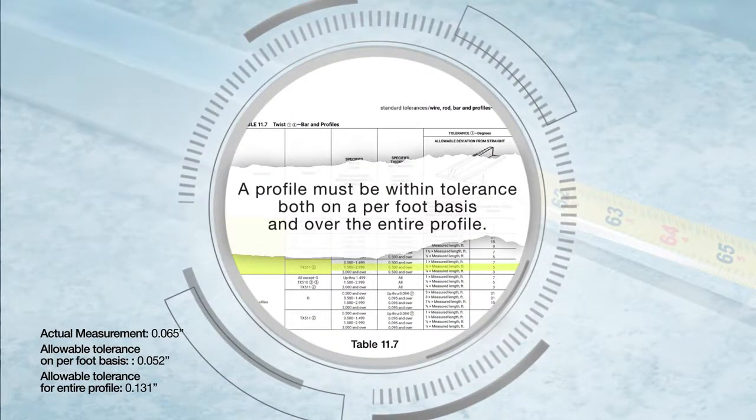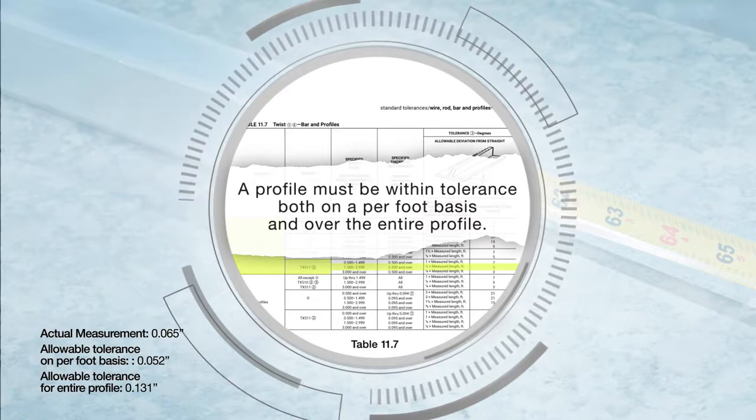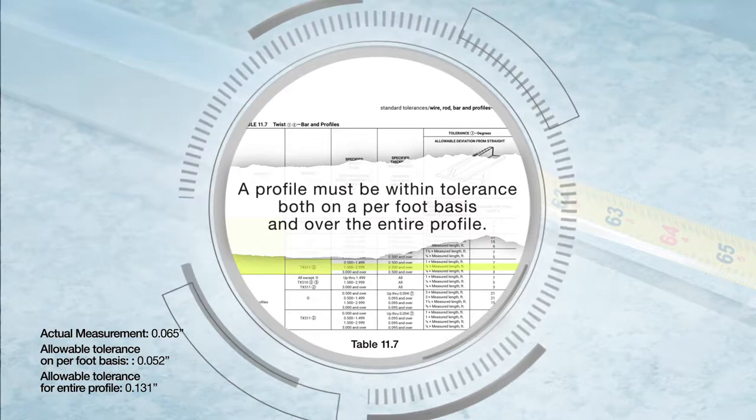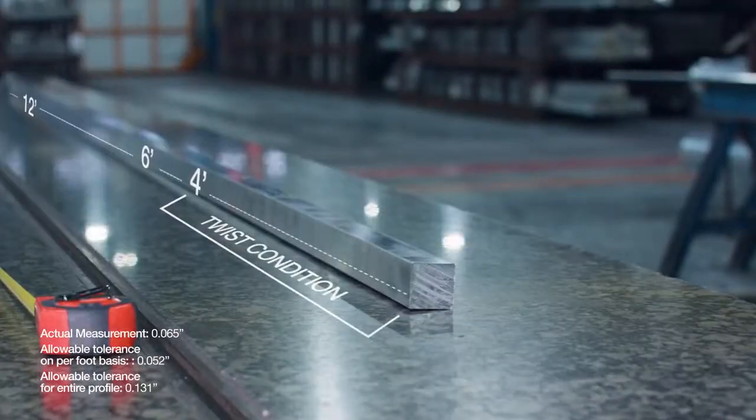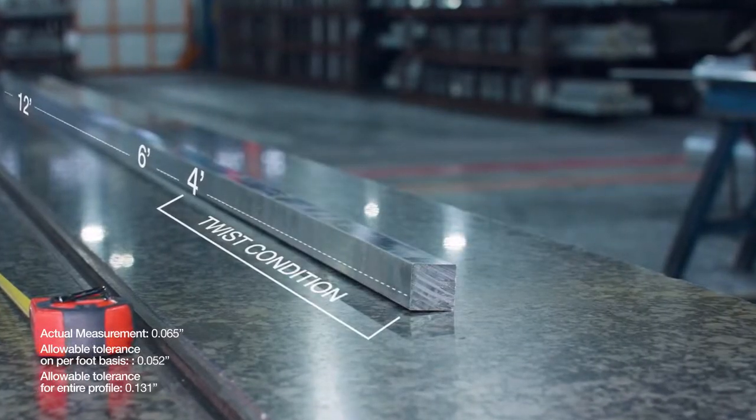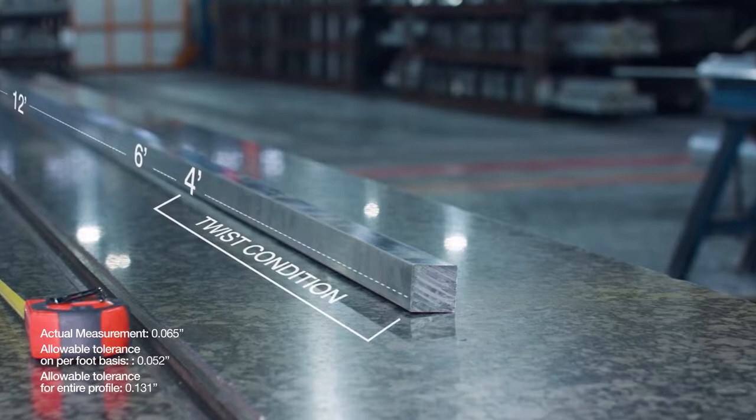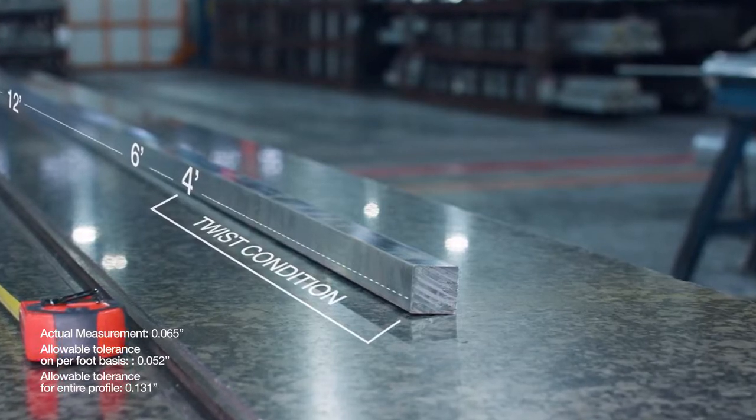A profile must be within tolerance both on a per foot basis and over the entire profile. Since this profile is only within tolerance over the entire length and not on a per foot basis where the twist condition is most visible, it is not considered within tolerance.